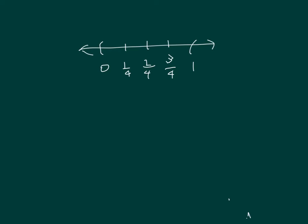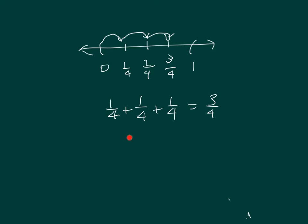Let me show you the sum of 1 fourth plus 1 fourth plus 1 fourth. It goes 0 to 1 fourth, plus another fourth, plus another fourth. You get 3 fourths. We can also show that as a multiplication sentence: 3 times 1 fourth equals 3 fourths.